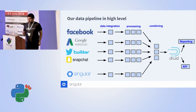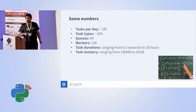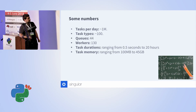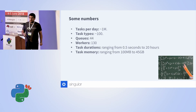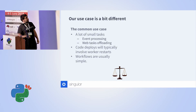Some numbers: the number of tasks we run per day is around 1 million. We have about 100 task types, 44 queues, around 130 workers. One of the more interesting things is that tasks are rather unpredictable — they can take less than a second or up to 20 hours, especially because we depend on third parties that can be slow to pull data from. The same variability applies to memory usage, depending on how granular the data is from Facebook or AdWords.